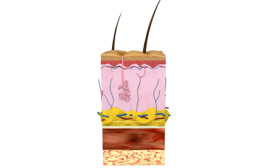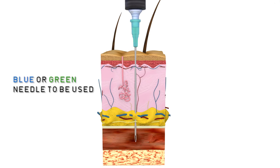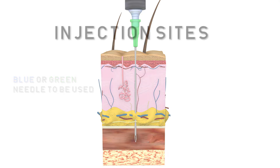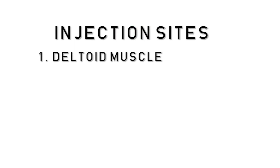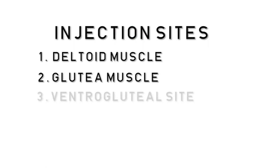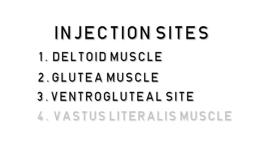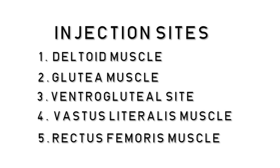The intramuscular route is used when a rapid systematic action is required. The nurse must consider whether a blue or a green needle should be used to access the muscle of the patient without hitting the periosteal layer of the bone. The intramuscular injection can be given on five sites: the deltoid muscle, the gluteal muscle, the ventrogluteal site, the vastus lateralis muscle, and the rectus femoris muscle.